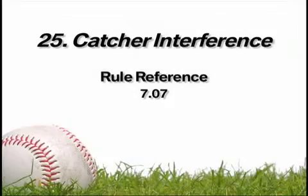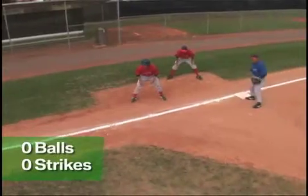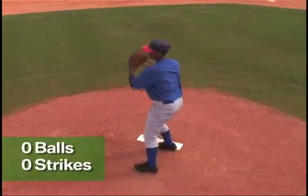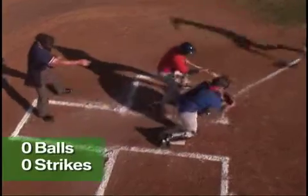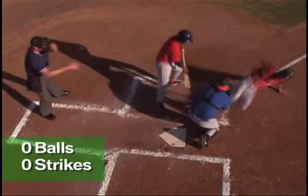Situation 25: Catcher Interference. No balls, no strikes. With a runner charging home, the catcher moves into position to make the play.